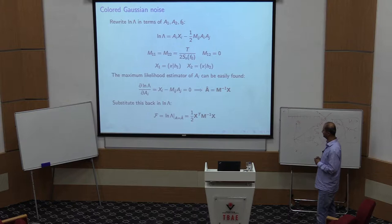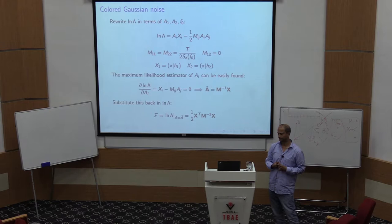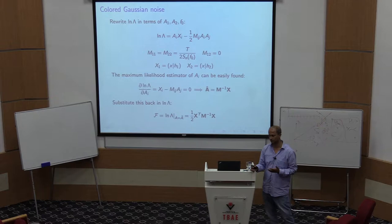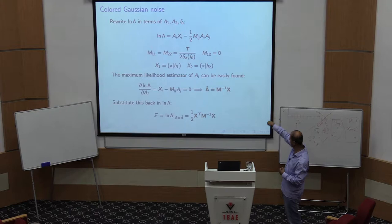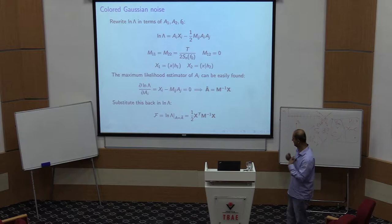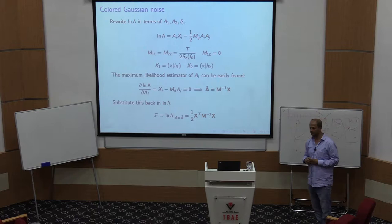Now I have this quadratic form and I maximize the log of lambda over the amplitudes by simple differentiation, yielding a linear equation. Solving gives M inverse times x, which are the best fit values for a1 and a2 — that is, the best fit amplitude and initial phase. This was completely analytic, requiring no numerical calculation.